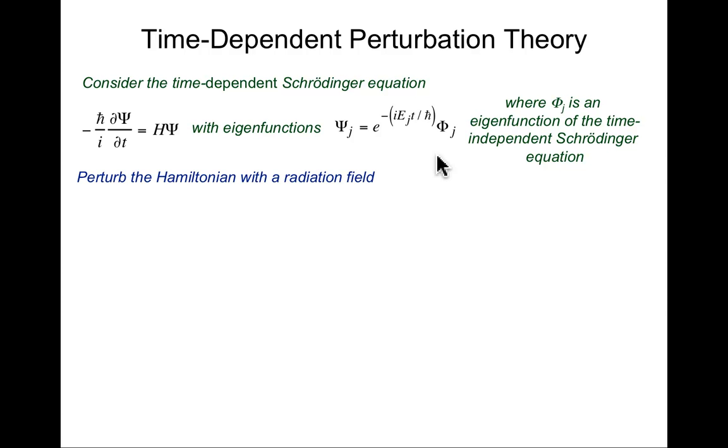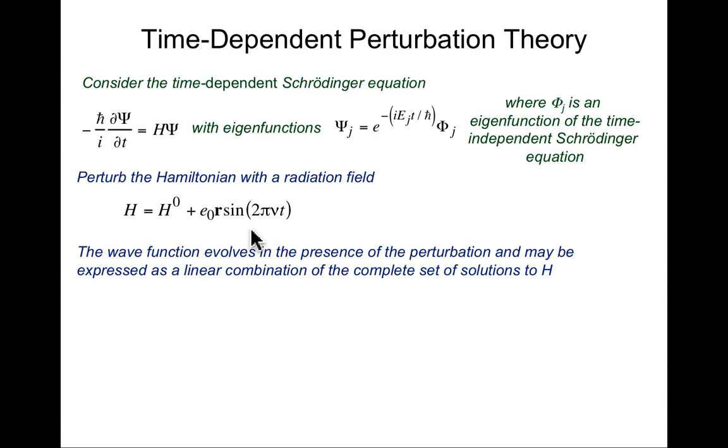If we perturb our Hamiltonian with a radiation field, which is to say if a photon is coming in, it's not just attraction to the nuclei, repulsion of electrons with one another, and kinetic energy, then the new Hamiltonian is going to be the original Hamiltonian plus this radiation field. It's position-dependent, time-dependent, there's a frequency associated with it, that's the frequency of the photon, and this is just carrying units of charge, e_0. That's the electric field, if you like, and the wave function proceeds then to evolve in the presence of the perturbation.